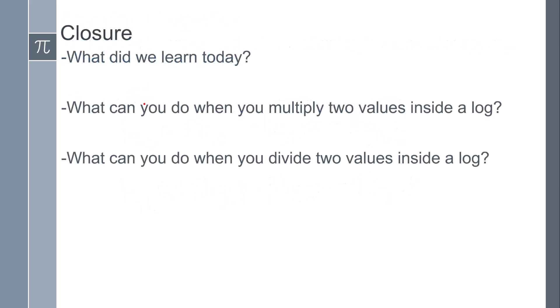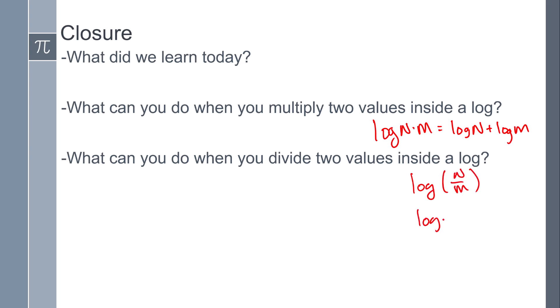So what did we learn today? We learned about two extra properties of logs — the product rule and the quotient rule — and we expanded logs, starting with one log and expanding it into multiple logs. When you multiply two values inside a log, you can write it as two separate logs with addition. When you divide two values inside a log, you can write it as two separate logs with subtraction. This concludes our lesson — if you have any questions, please leave them in the comments.